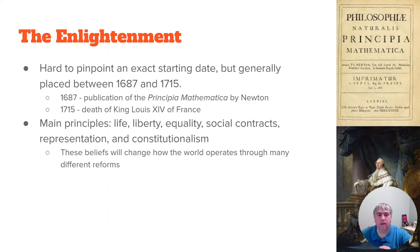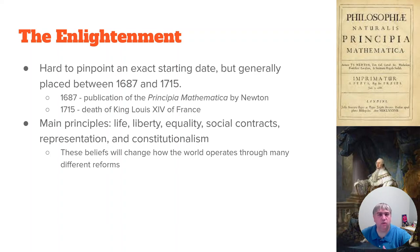The main principles of the Enlightenment can be simplified into these self-evident ideals: the pursuit of life, liberty, and happiness. It's about equality, social contracts, democratic and republic representation, the building of constitutionalism, and the writing of constitutions. These beliefs were going to be used to try and change the world — an attempt to reform the world in the late 1600s and early 1700s, where social and political norms throughout Europe were going to be tested.